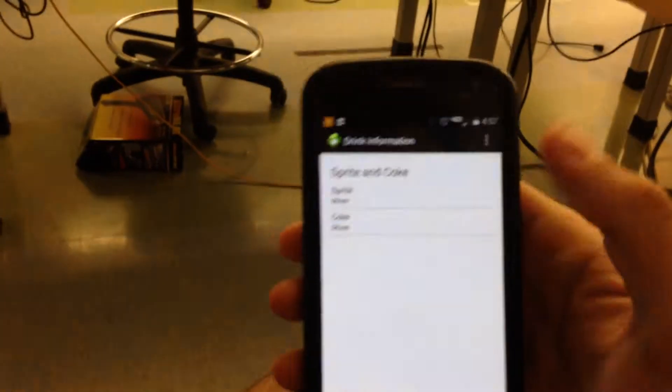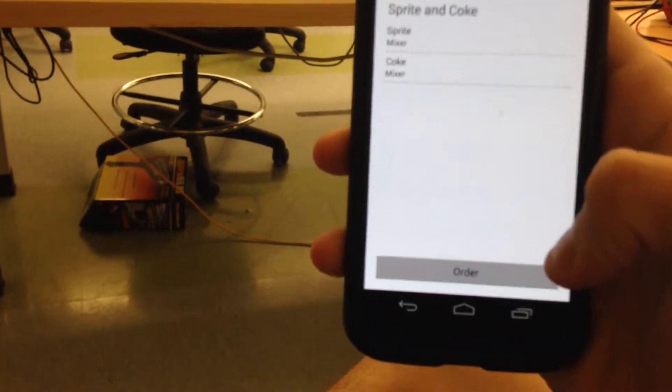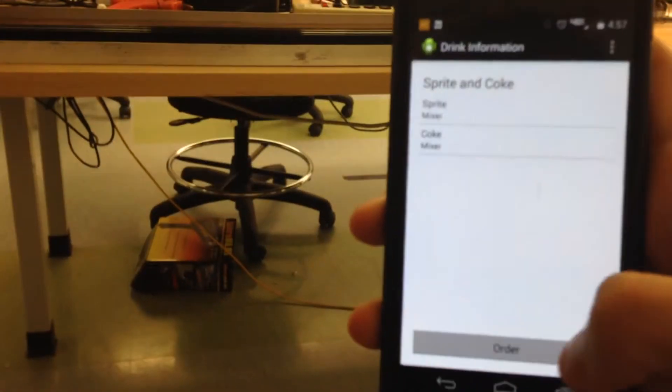You can see on the app, it's a Sprite and Coke. The ingredients are Sprite and Coke, which are both mixers. Once I hit the order button, it should come in, so let's see it work.